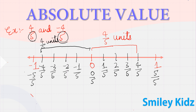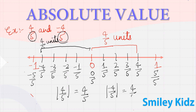The absolute value of four by five is four by five, and the absolute value of minus four by five is also four by five.